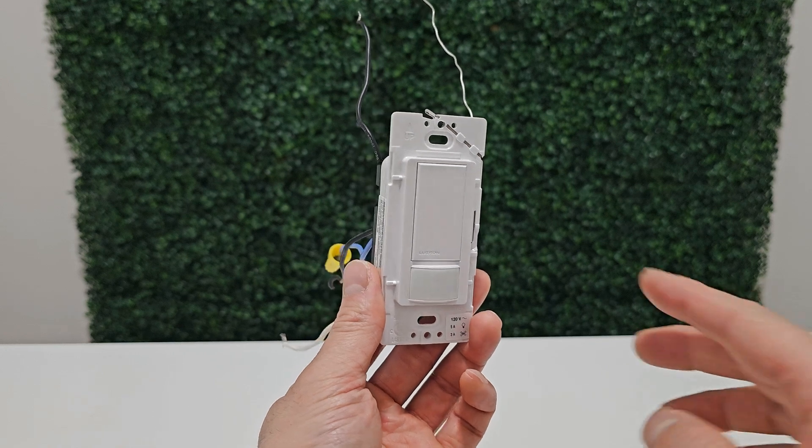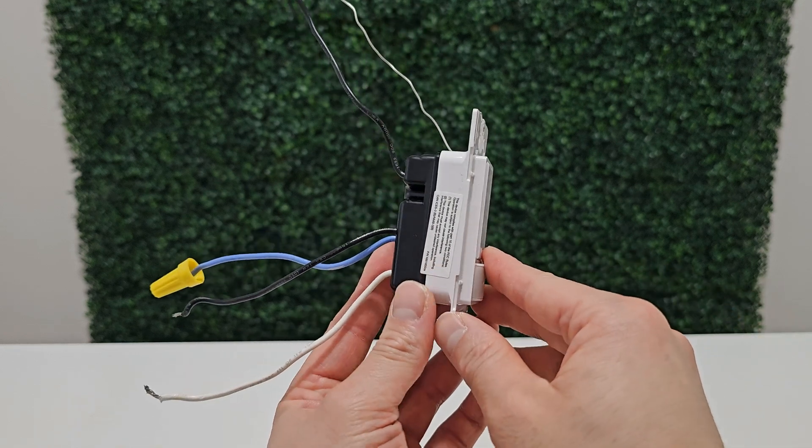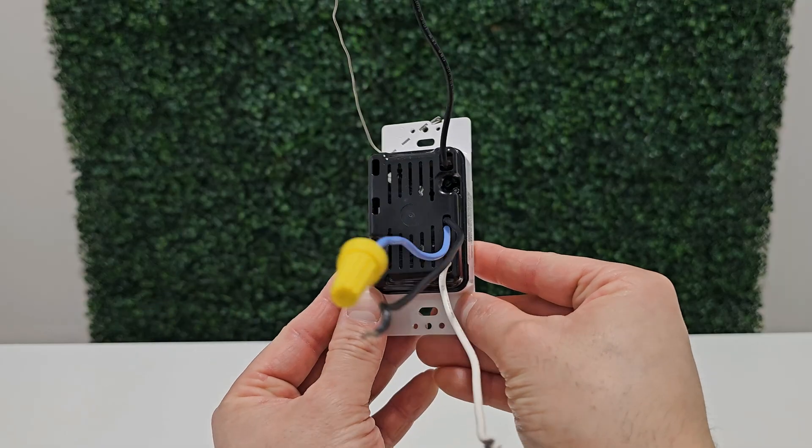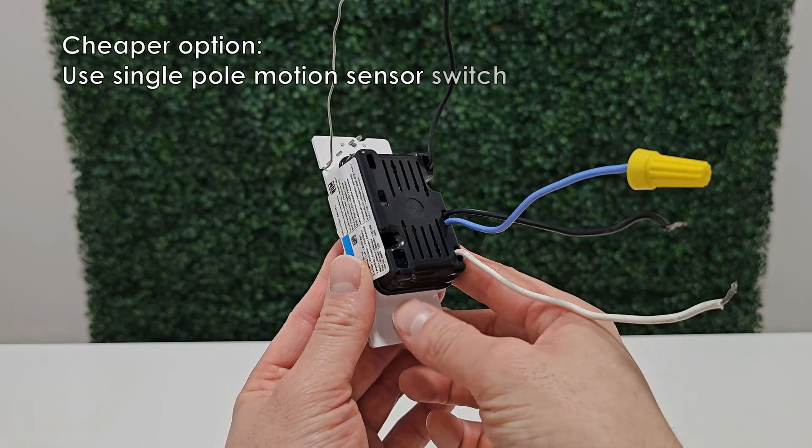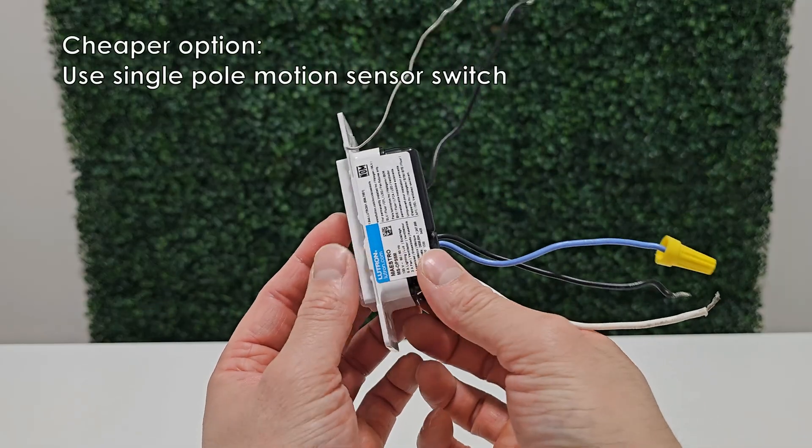In this video, I will be using a single or multi-location motion sensor switch. The cheaper alternative would be using a single pole motion sensor switch.